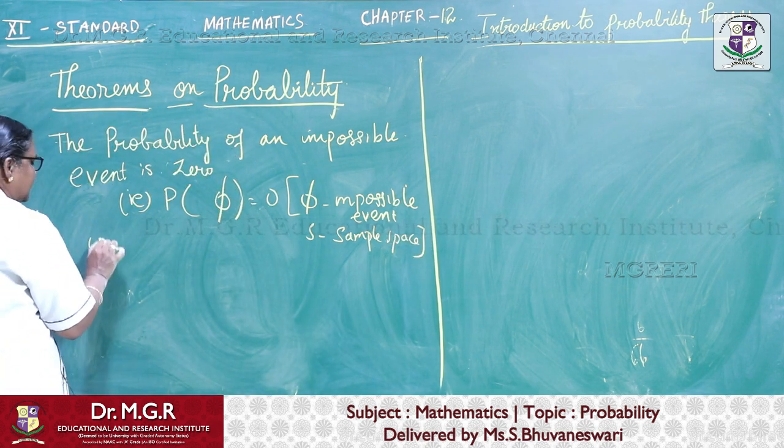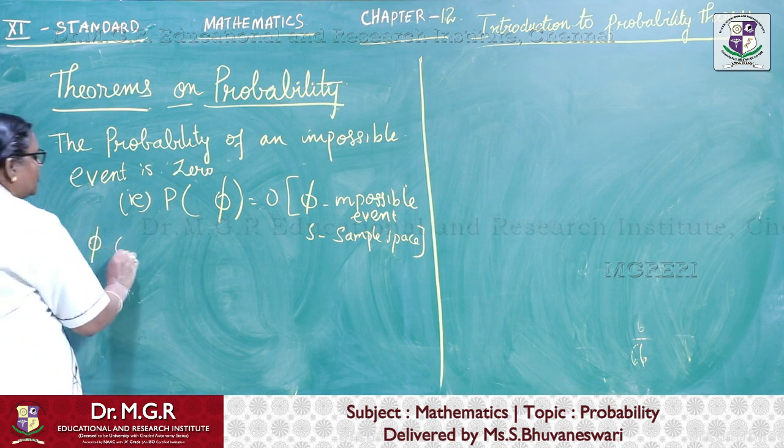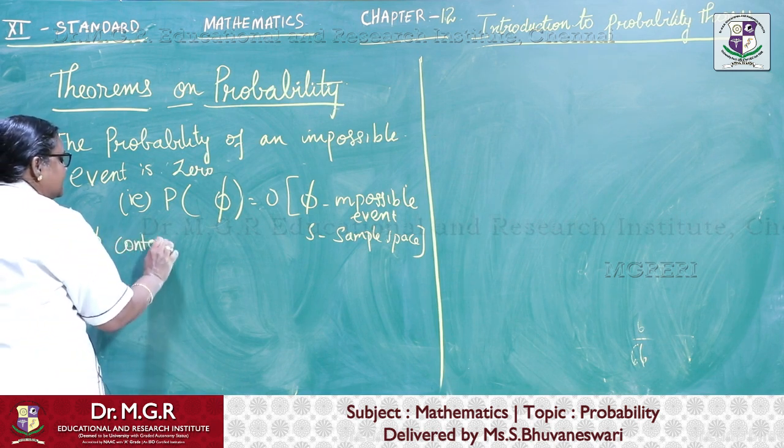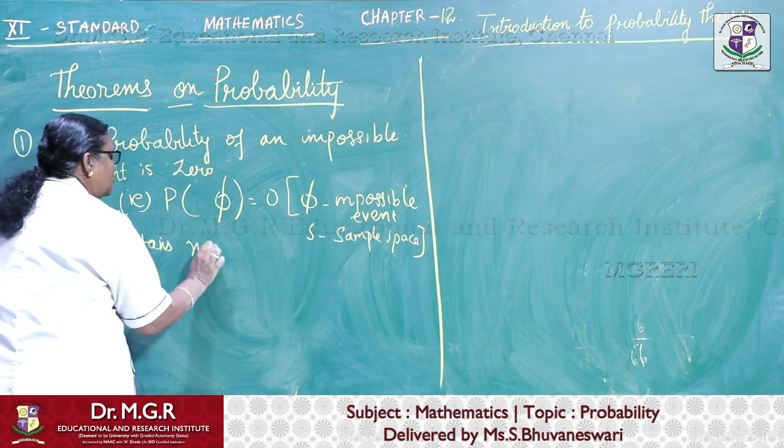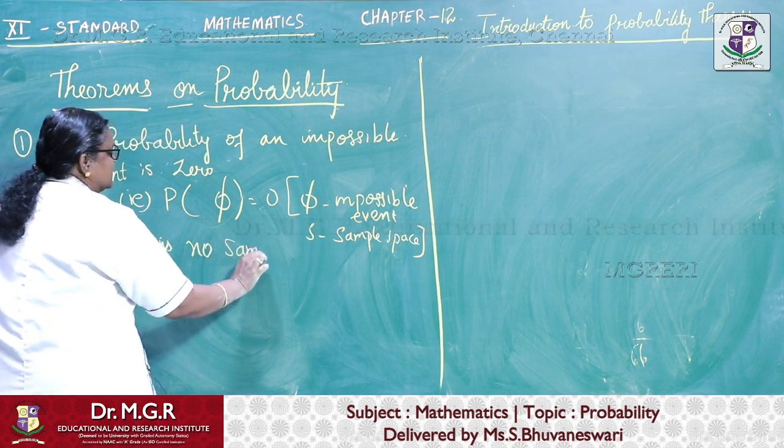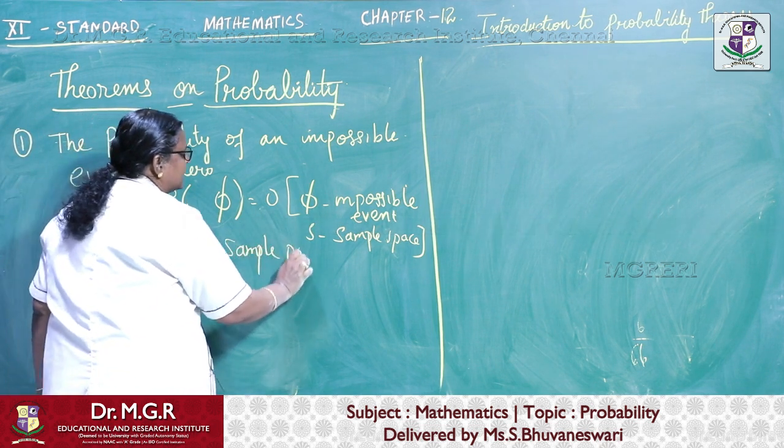Then impossible means the event is not at all occurring. So phi contains, you can also say, no sample points. It will not contain any point at all.